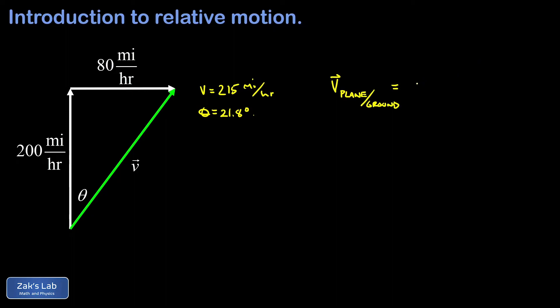The velocity of the plane with respect to the ground is equal to the velocity of the plane with respect to the air, plus — and this is a vector sum — the velocity of the air with respect to the ground.